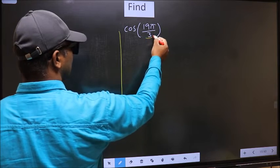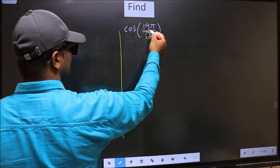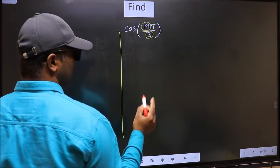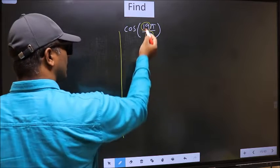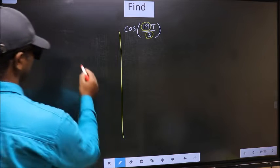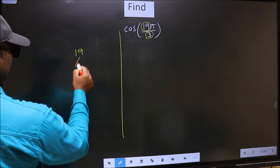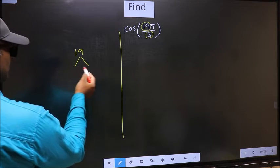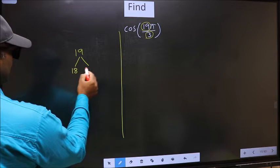In the denominator, we have 3. In the numerator, 19. Now you should check, 19 is close to which multiple of 3? What I mean is, 19 and here you write multiples of 3, that is 18, 21.